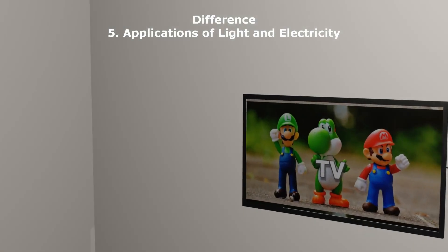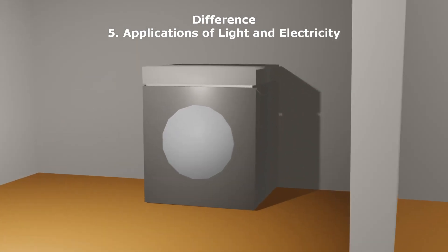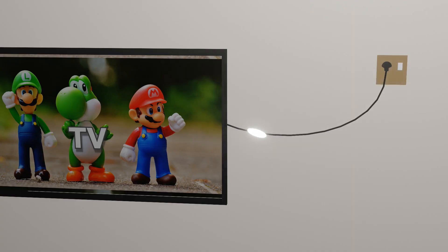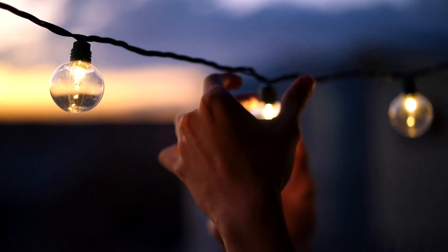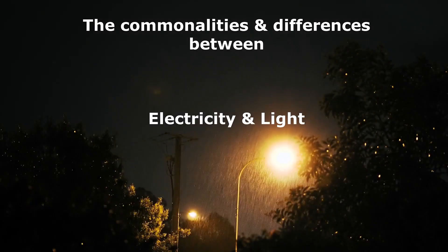Lastly, a significant difference between light and electricity is their applications. Electricity is used for powering machines and devices, while light is used for illumination and communication purposes. So there you have it, the commonalities and differences between light and electricity.